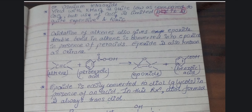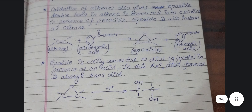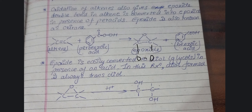Oxidation of alkene always gives us an epoxide. Epoxide का structure triangular shape का होता है, जिसमें सिर्फ एक ही oxygen होता है। Ozonide की तुलना में epoxide में सिर्फ एक oxygen का अंतर है। जब alkene perbenzoic acid के साथ react करता है तो हमको epoxide मिलता है और एक benzoic acid मिलता है।